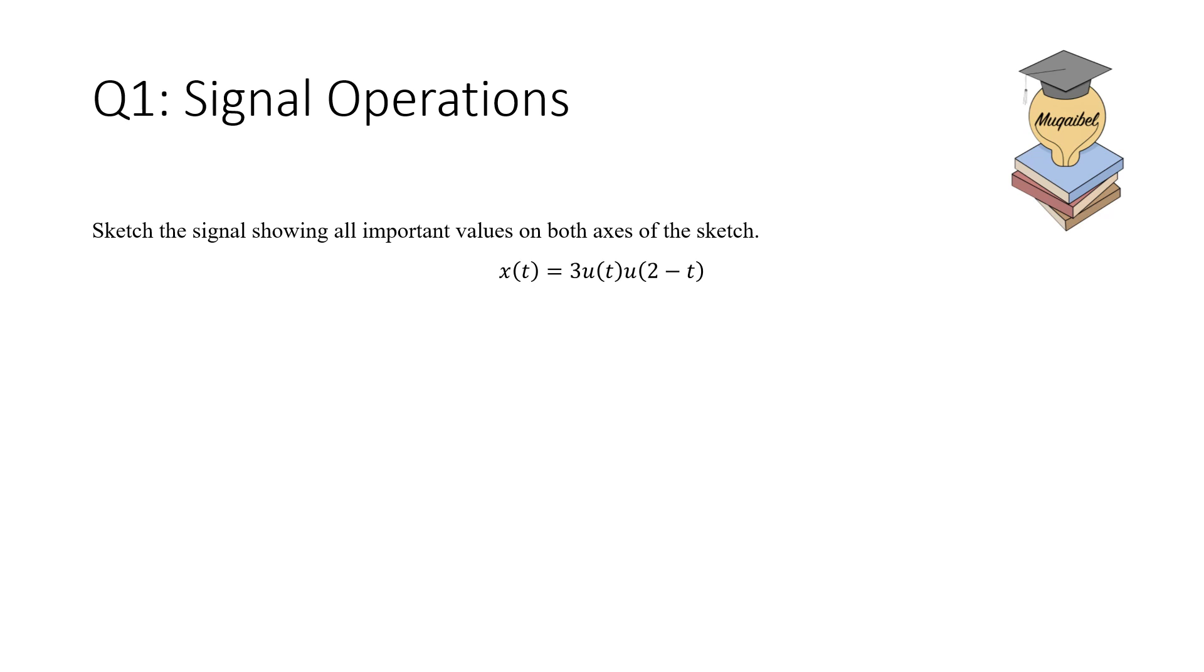Welcome again, this is Dr. Ali Mugable. We have two questions to test your understanding in signal operations, finding power and energy. The first question is: sketch the signal showing all important values on both axes of the sketch. The signal is x(t) = 3u(t)·u(2-t).